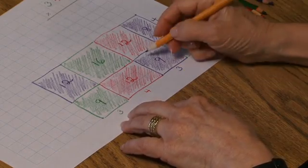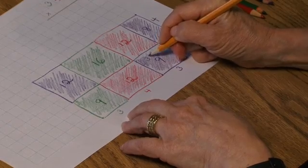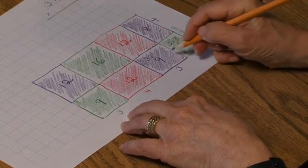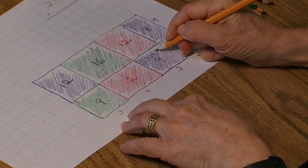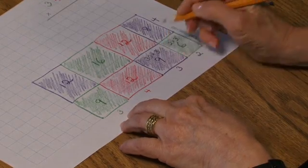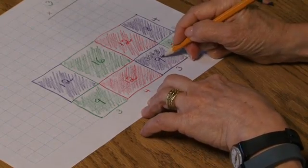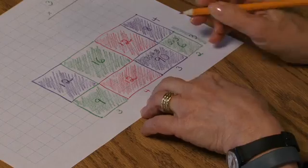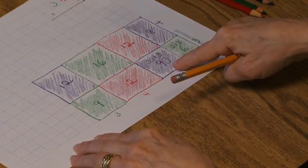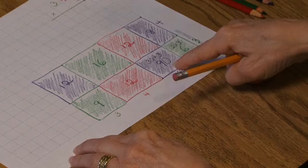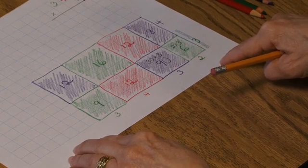This represents 30, 3 tens taken 3 times. And the 9 is actually 9 tens or 90. So I can show that by adding a 0 to the 9 I had recorded.